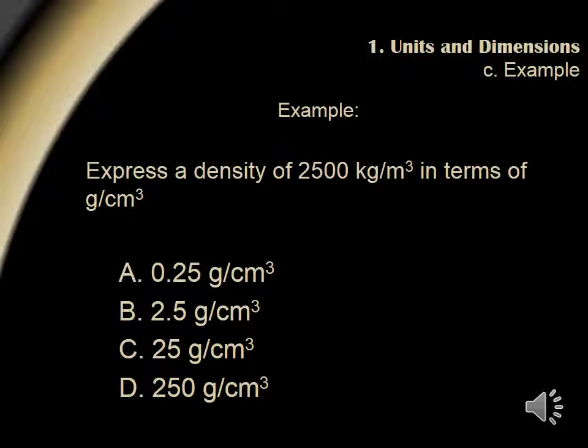For our first example, we're asked to express a density of 2500 kilograms per meter cubed in terms of grams per centimeter cubed. We can practice using our powers of 10 by first expressing 2500 kilograms per meter cubed in exponential notation. This gives us 2.5 times e to the third power. Since we have kilograms on top, let's first use a conversion factor to convert kilograms into grams.